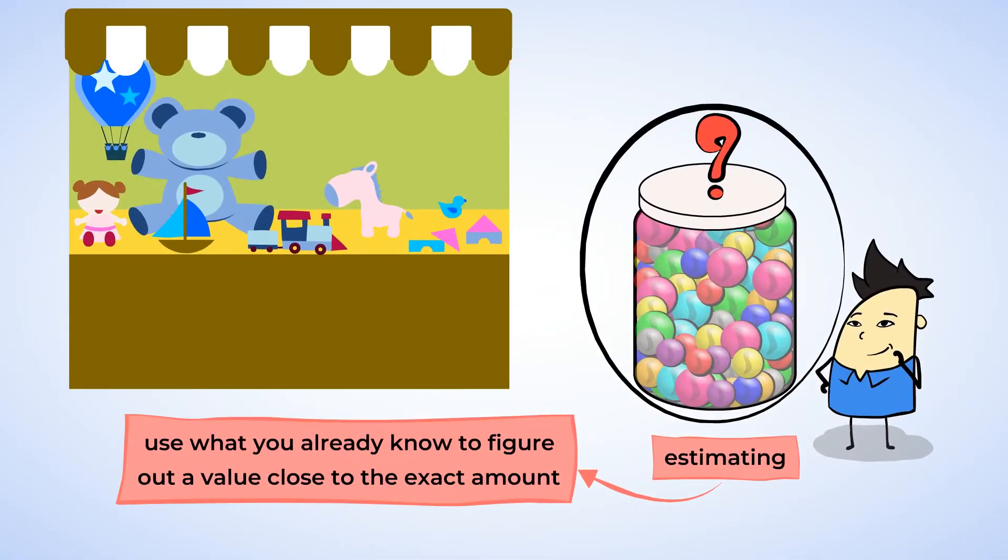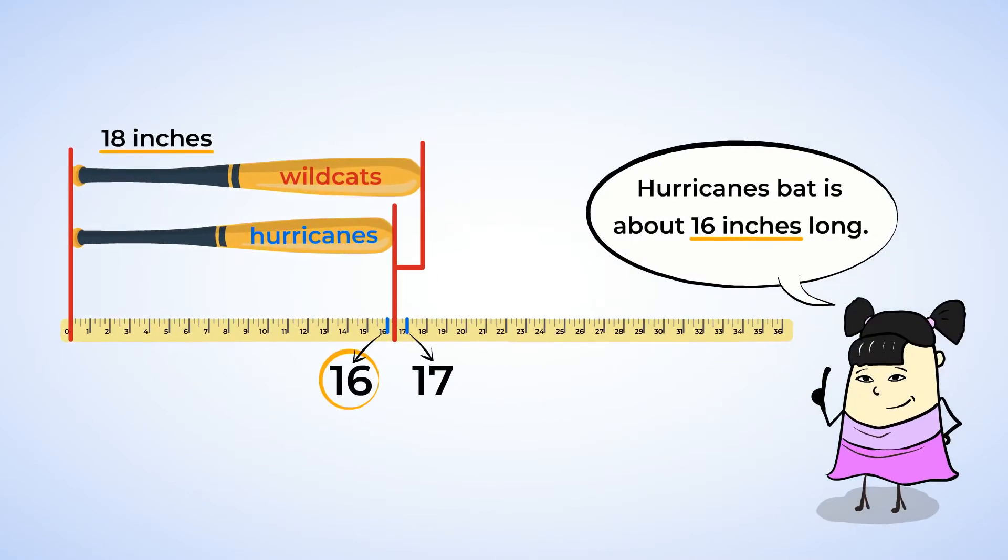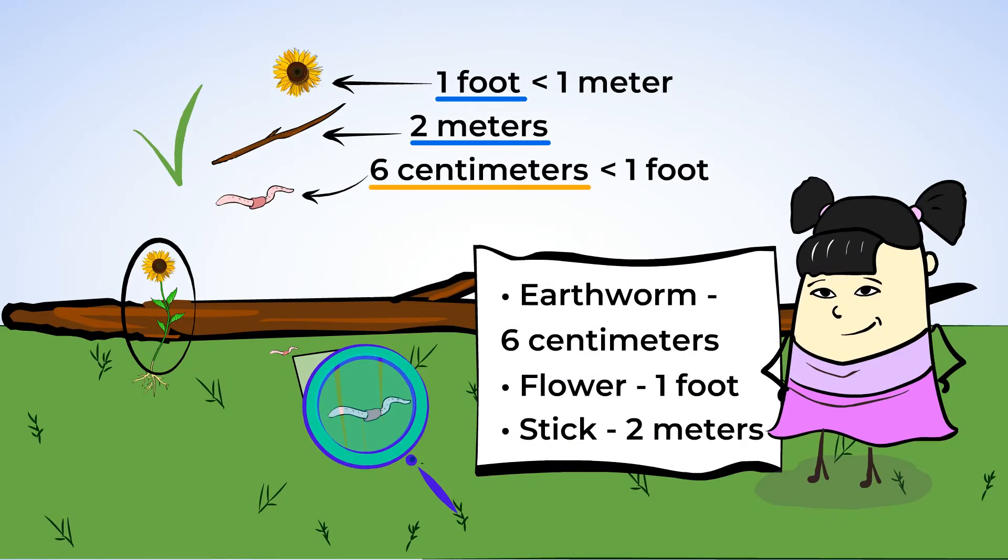You learned that to estimate length, you just have to use what you already know to make a good guess. You may know the length of a different object, or you may be able to think about the sizes of different units to help.